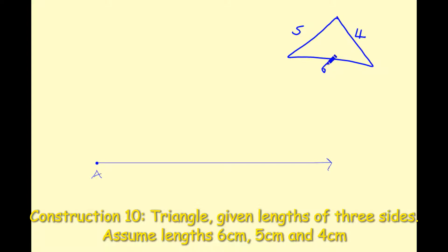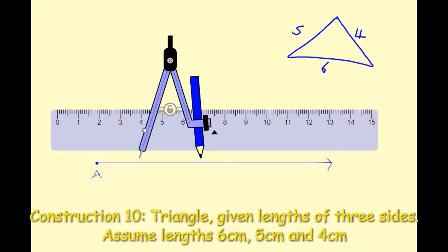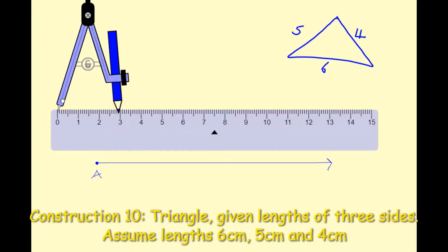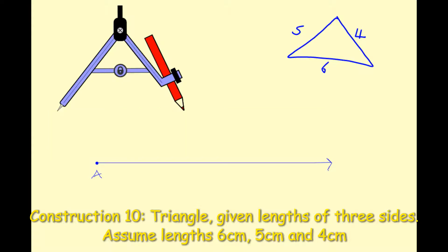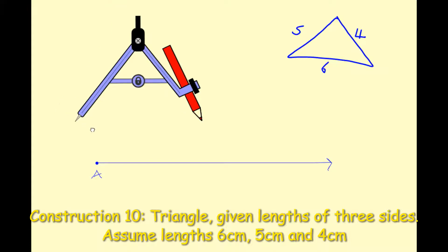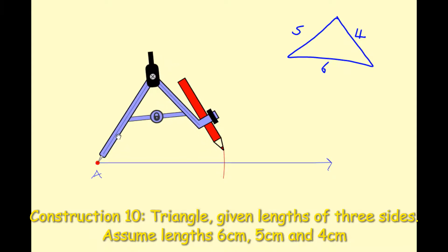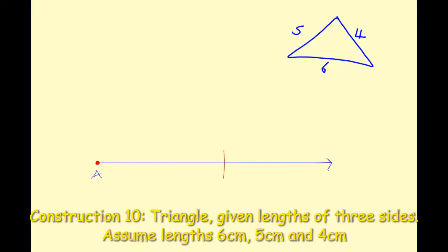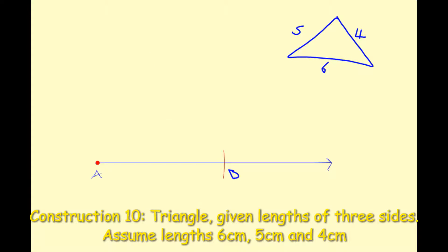I now want to measure a length of six centimetres on that ray. I'll take out my ruler and compass, placing the nib at zero and extending it out to six centimetres — that gives me the length of my baseline. I'll bring the nib of my compass down to A and draw an arc on the line. That arc marks a distance of six centimetres from A, so I'll label that point B and write in the six centimetres for the line segment AB.